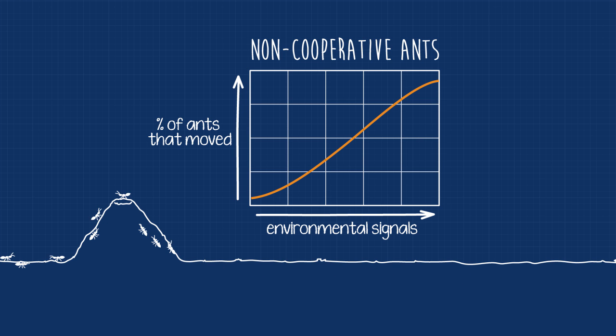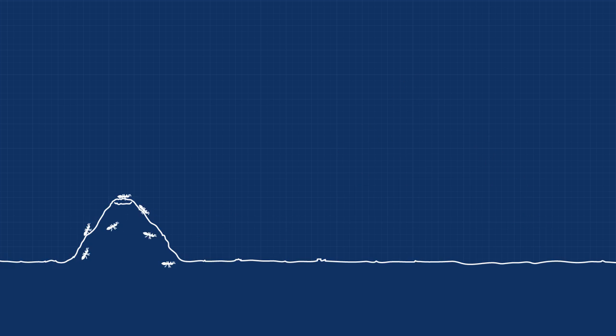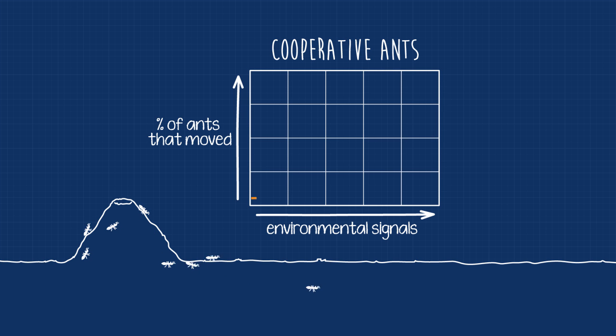But ants tend to behave cooperatively, meaning that each ant's decision affects its neighbors. The more ants decide they want to move, the more influence this will have over the rest of the colony.